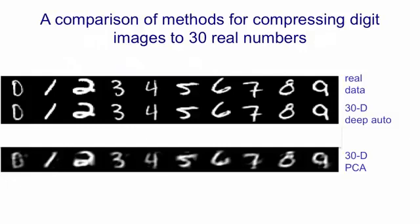If you look at the first row, that's one random sample from each digit class. If you look at the second row, that's the reconstruction of the random sample by the deep autoencoder that uses 30 linear hidden units in its central layer. So the data has been compressed to 30 real numbers and then reconstructed. If you look at the 8, you can see that the reconstruction is actually better than the data — it's got rid of the little defect in the 8 because it doesn't have the capacity to encode it. If you compare that with linear principal components analysis, you can see it's much better. A linear mapping to 30 real numbers cannot do nearly as good a job of representing the data.